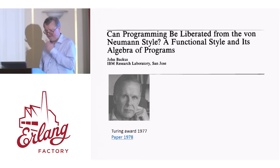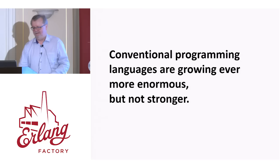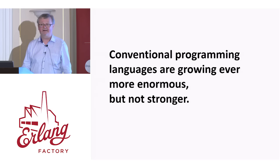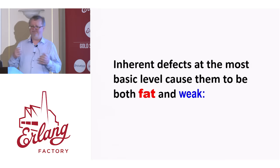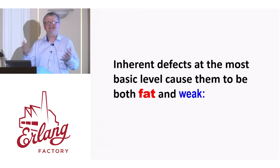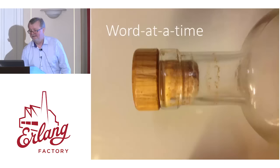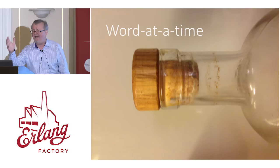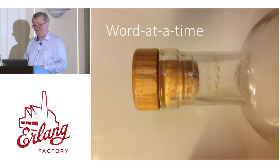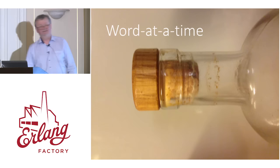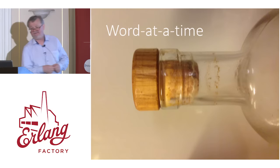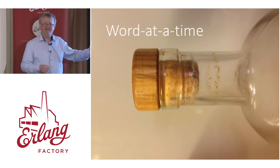I'm just going to quote a little bit from the introduction to the paper. 'Conventional programming languages are growing ever more enormous, but not stronger.' — Backus is thinking of languages like ADA here. 'Inherent defects at the most basic level cause them to be both fat and weak.' Their primitive word-at-a-time style of programming, inherited from their common ancestor, the von Neumann computer. He explains that a computer has three parts: a central processing unit, a store, and a connecting tube that can transmit a single word between the CPU and the store. He says: 'I propose to call this tube the von Neumann bottleneck.'